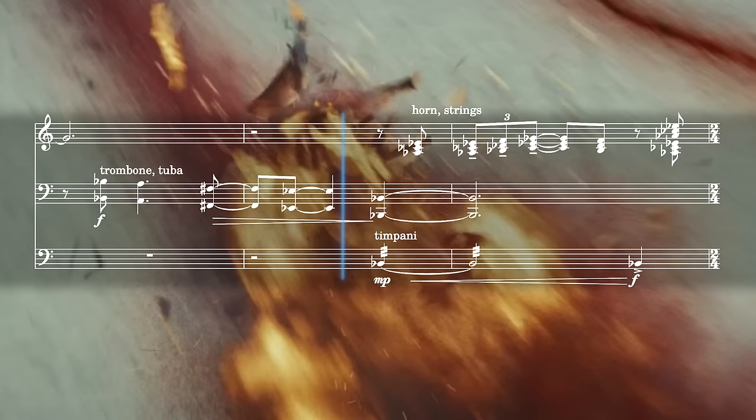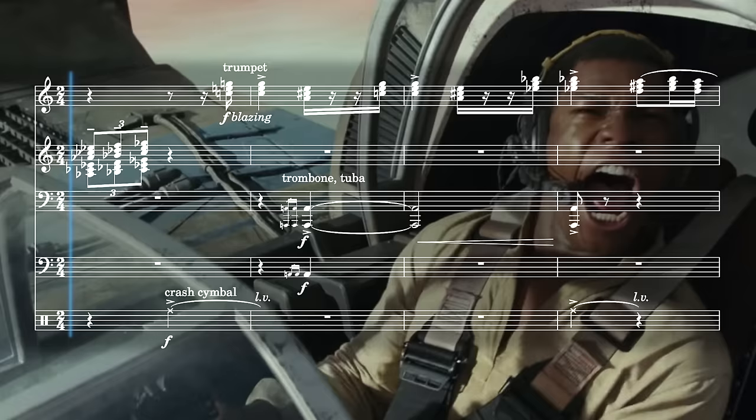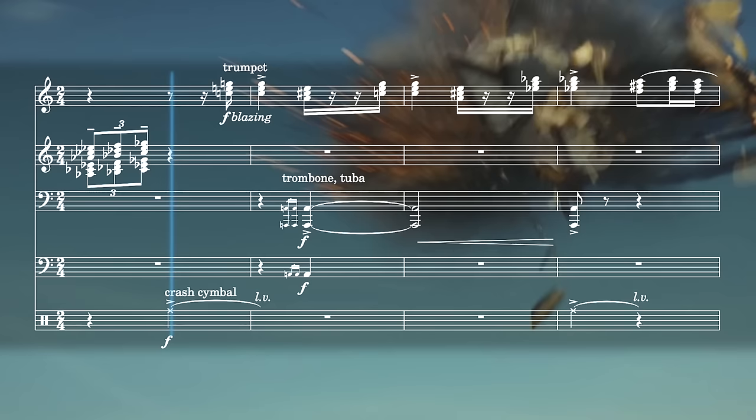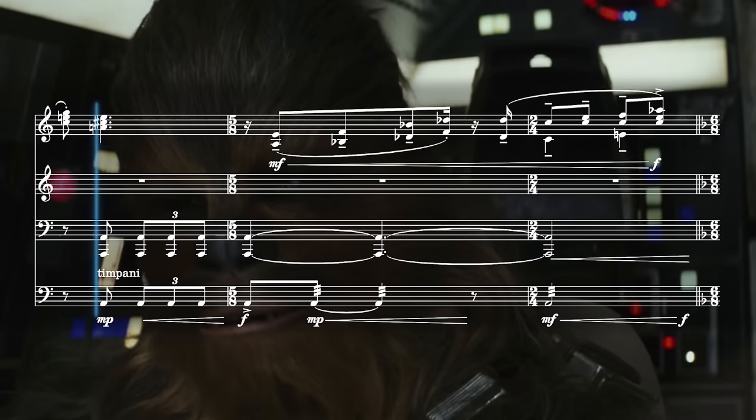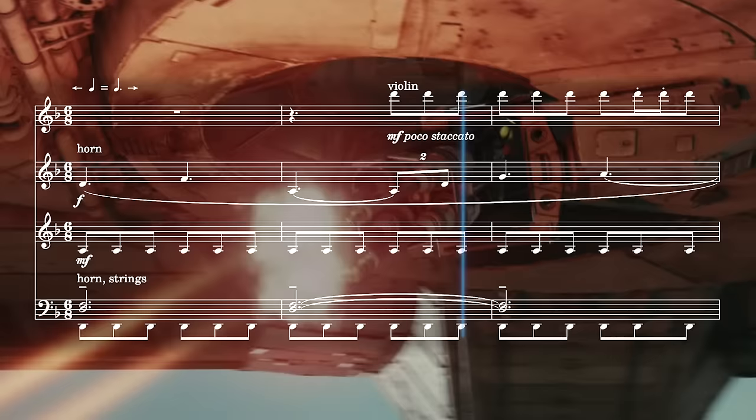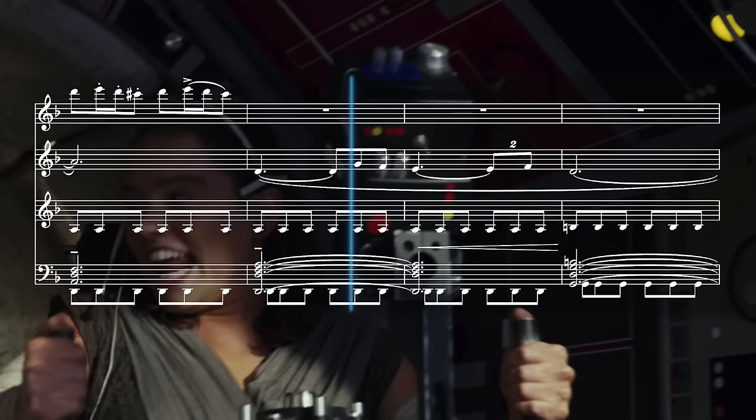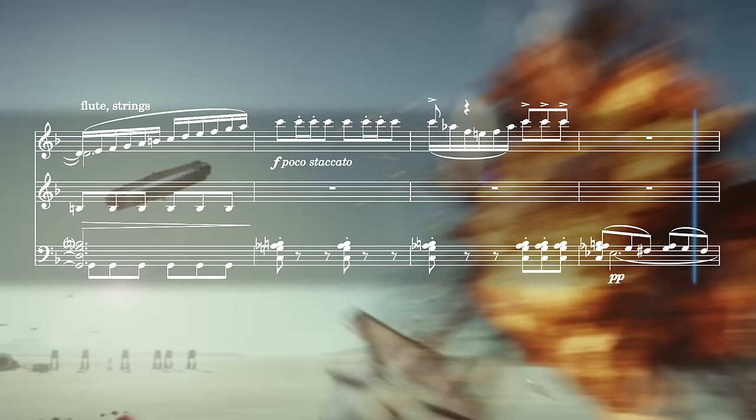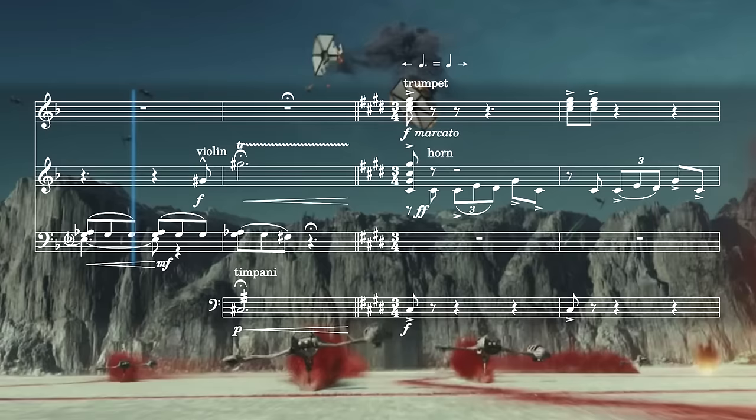As the falcon appears we hear the first rendition of the rebel fanfare. Followed directly by Ray's theme in D minor still in compound time. We then get a second metric modulation back into simple time for the desperation motif in C sharp minor to mark the first order's retaliation.